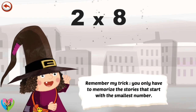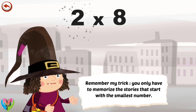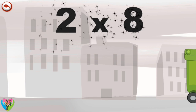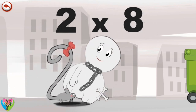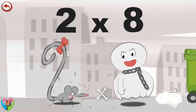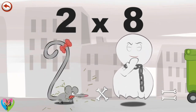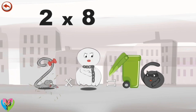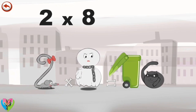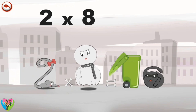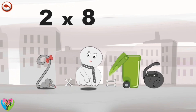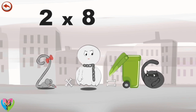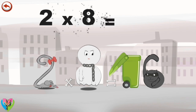Remember my trick. You only have to memorise the stories that start with the smallest number. What's the story of two times eight? When Two Squeaks is surprised by the wailing of Spooky Eight the ghost, she gives a little shriek. This wakes up a cat who was sleeping in a dustbin. When she sees the cat, she yells even louder. The ghost has found someone scarier than him. The dustbin and its lid make a one. The cat and its tail make a six. Two times eight is sixteen.